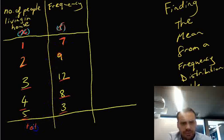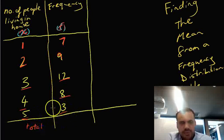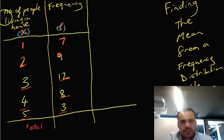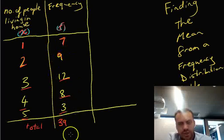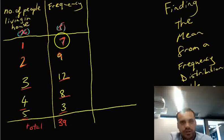Now there should be a total down the bottom here. It would be handy to know how many houses were actually surveyed. So add those numbers together, and we should get an answer. Okay, it looks like there were 39 houses in total that were surveyed.